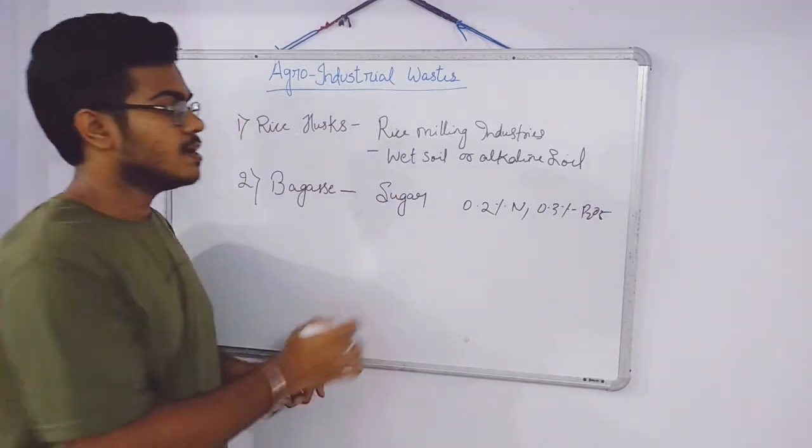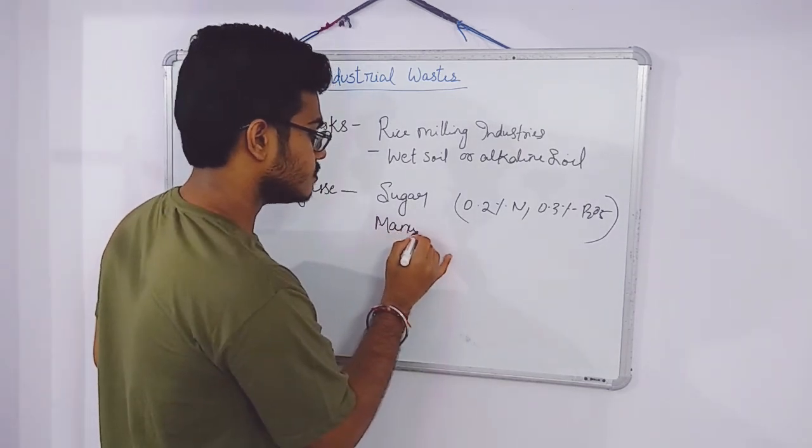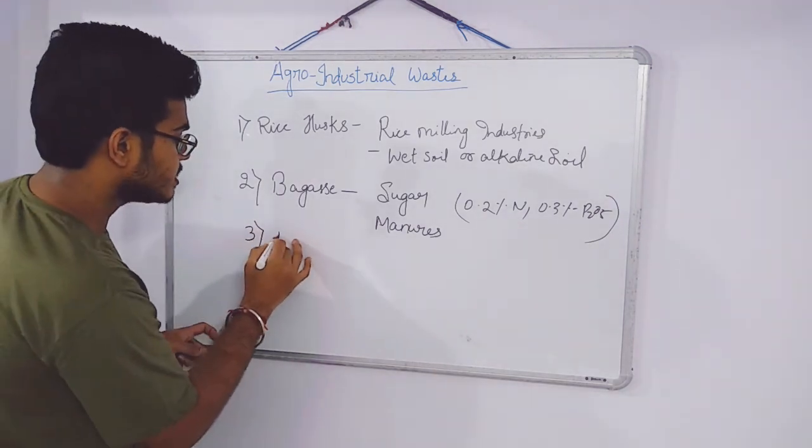The nutrient content is very less but this can be used as manures. The third one is press mud.